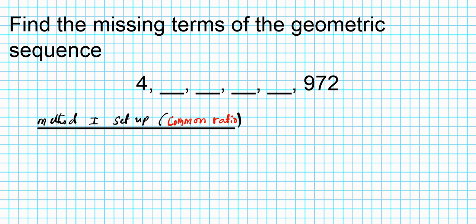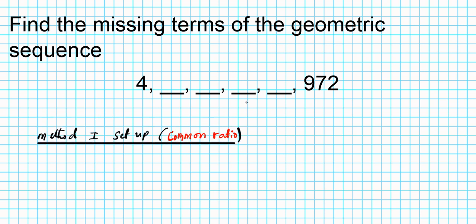If we take a look at this sequence, the question is how are subsequent terms generated? You have to do the same procedure over and over again. The operation for generating geometric sequences involves multiplying repeatedly by a constant — a term called the common ratio. An arithmetic sequence, by contrast, involves adding.